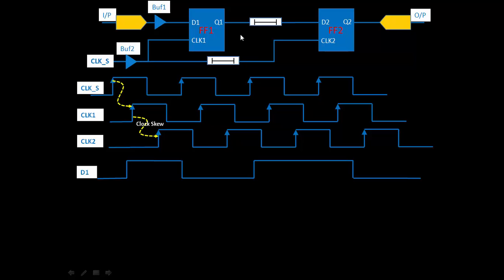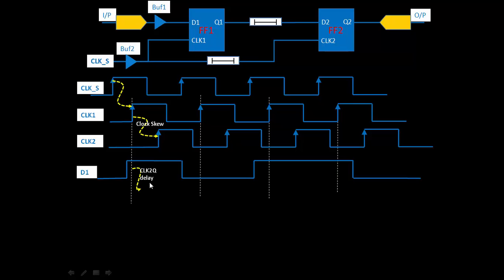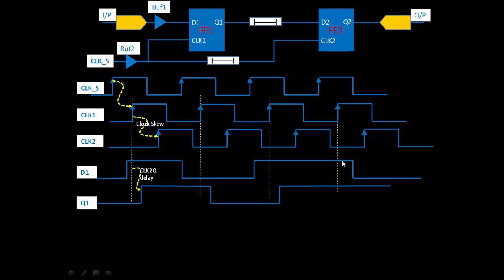This is our D1 — the input data applied to FF1. Since setup and hold time is zero, I am not concerned about data stability around the clock edge. The moment there is a clock edge, after a CLK-to-Q delay — which is the propagation delay of the flip-flop — you will get the Q1 data output.